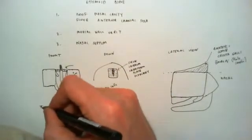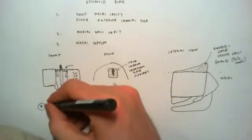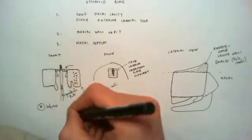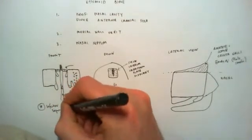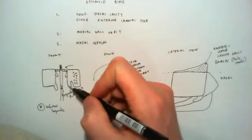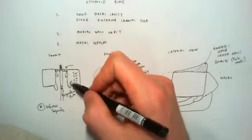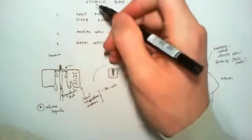But the inferior turbinate, this is the trick, inferior turbinate comes from a separate bone. It's just called the inferior turbinate, whereas these are the superior and middle turbinates, and they are both part of the ethmoid bone.